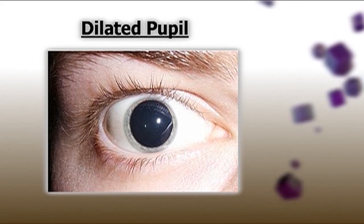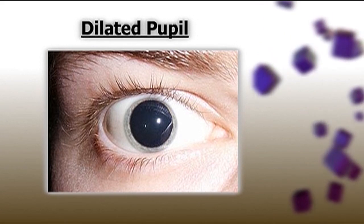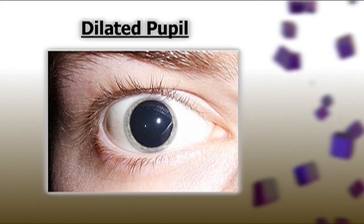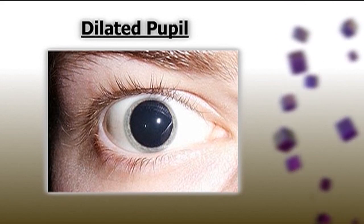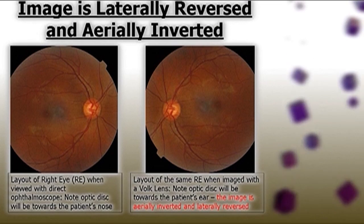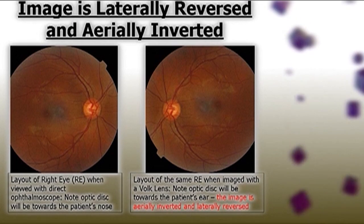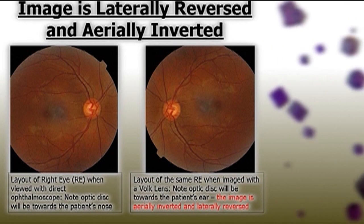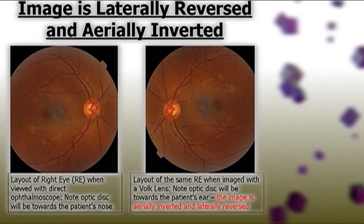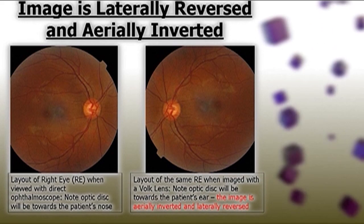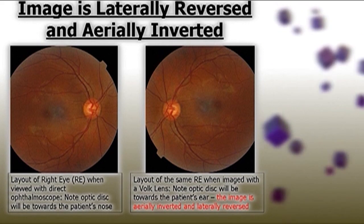When performing Volk Lens Assessment, you may wish to dilate the pupils of your patient, although many modern high positive powered lenses still enable a good stereoscopic image to be obtained over a wide extent of the retina. Remember, the image that you view through the eyepieces when performing Volk will be aerially inverted and laterally reversed. This means that if you are going to record what you see on a blank piece of paper, remember at the end to turn your page through 180 degrees to ensure that it is recorded the correct way up.